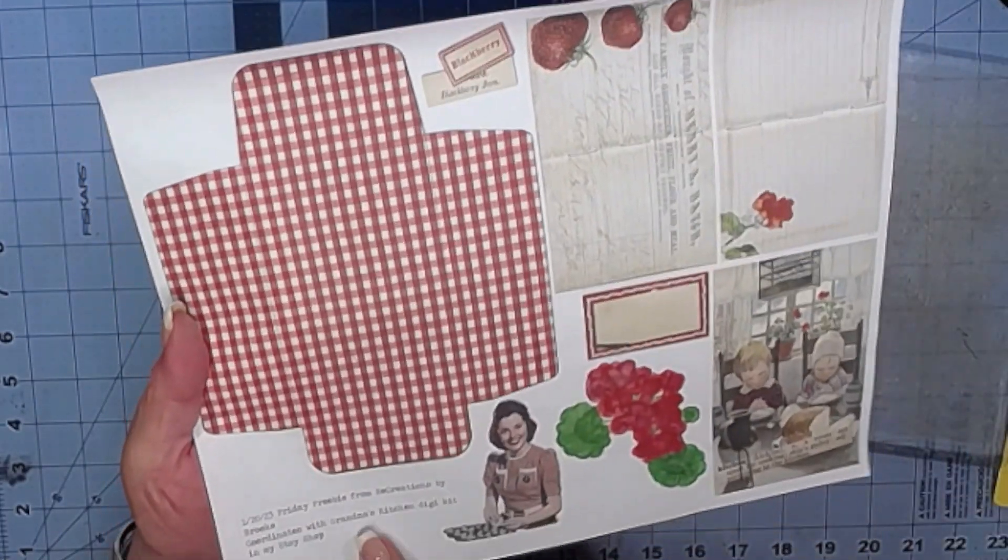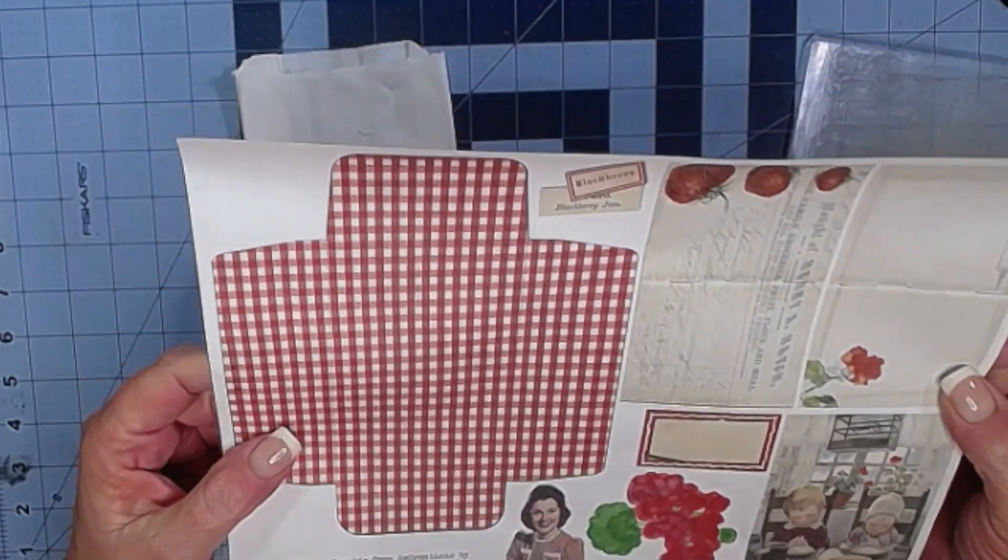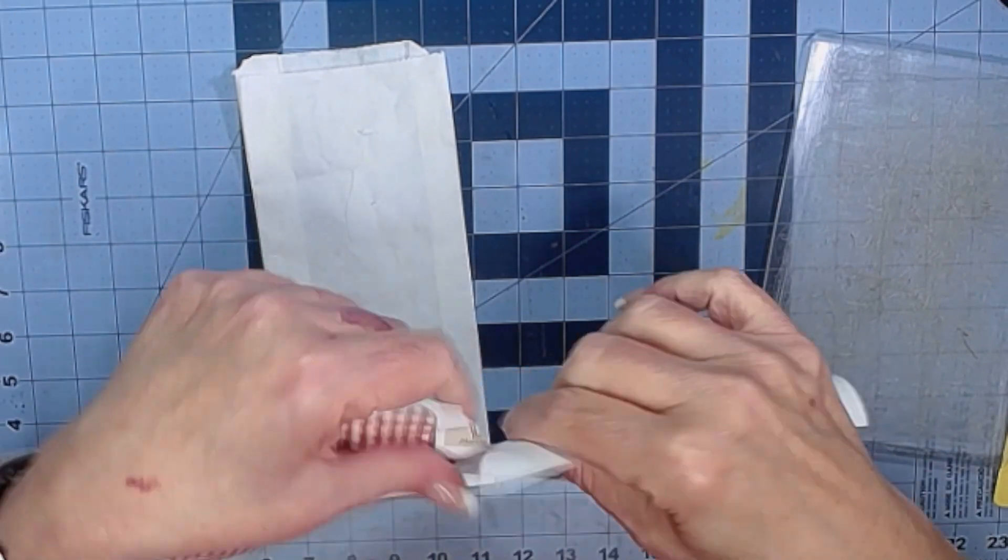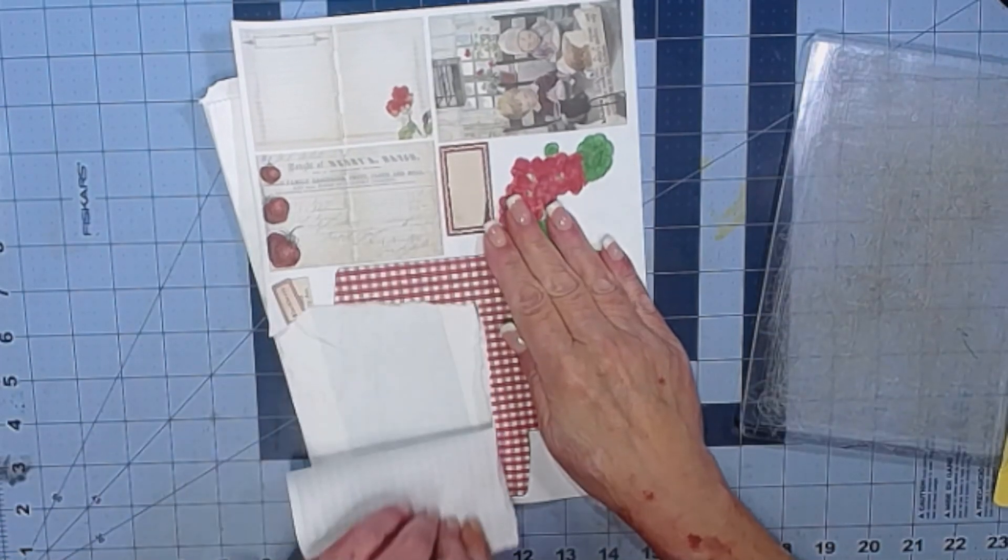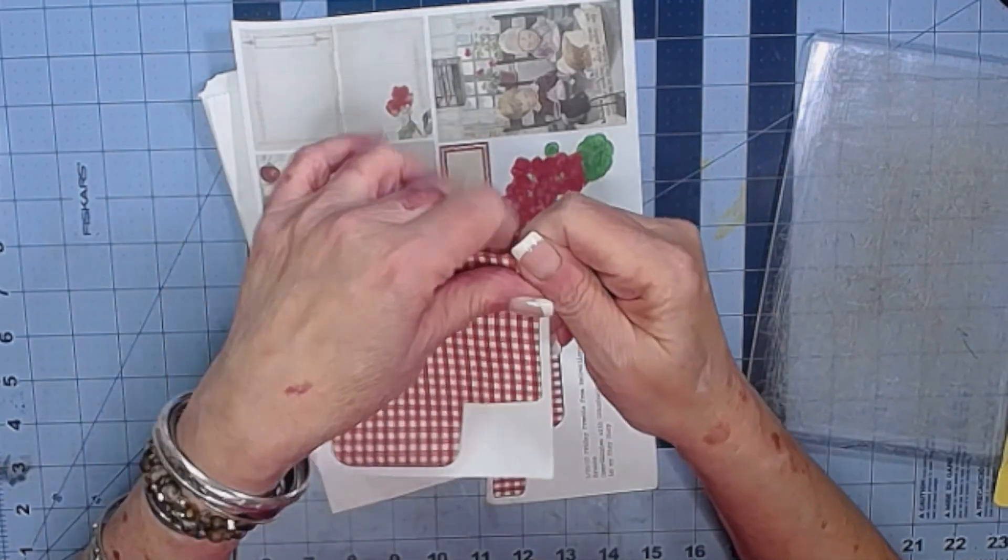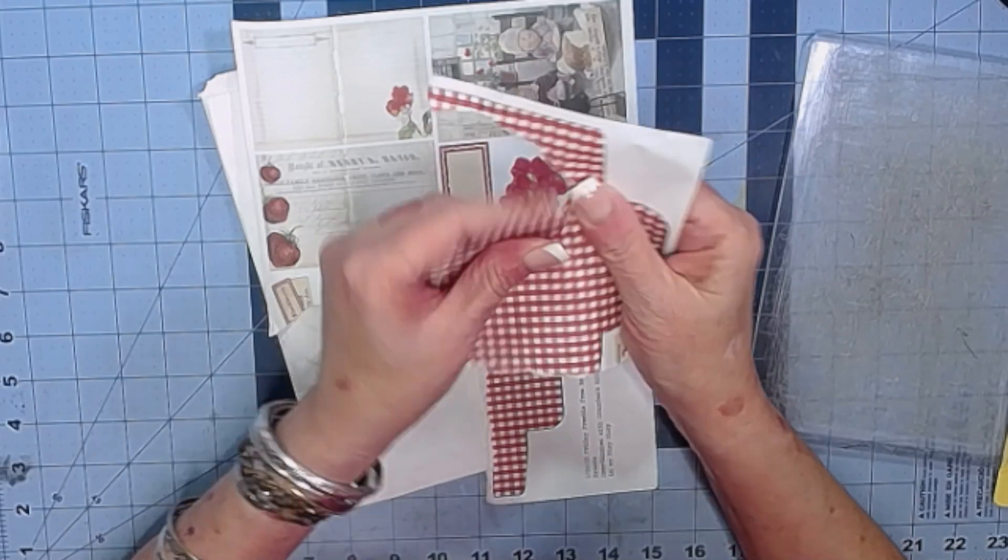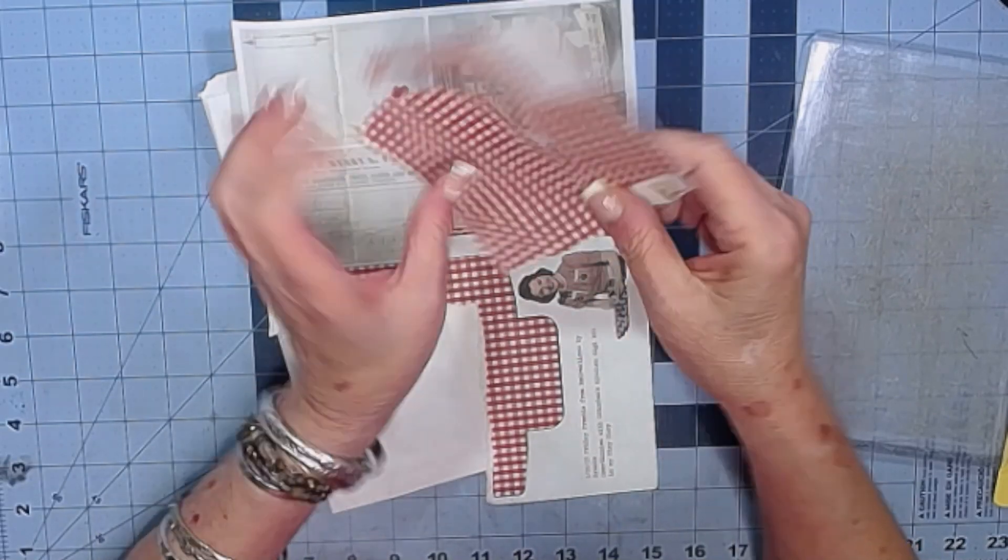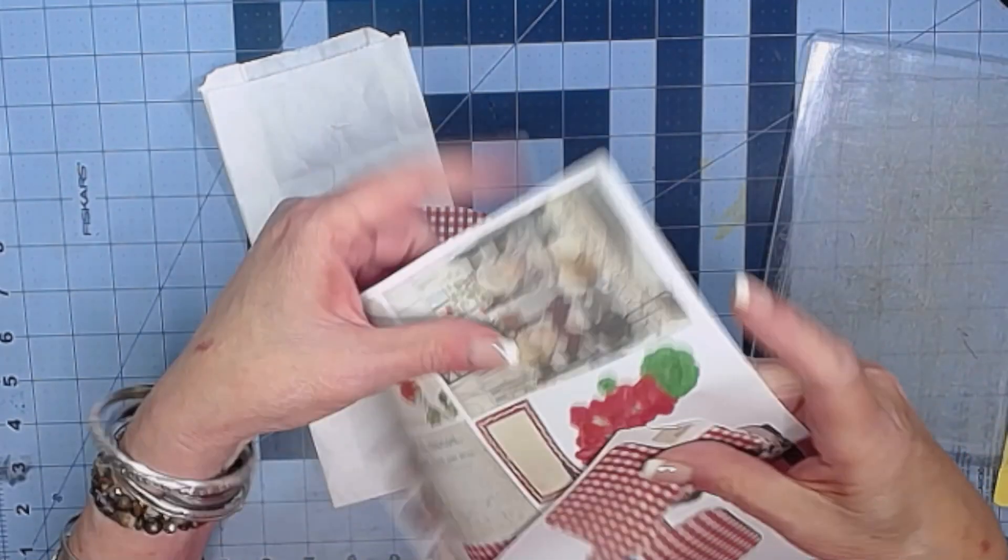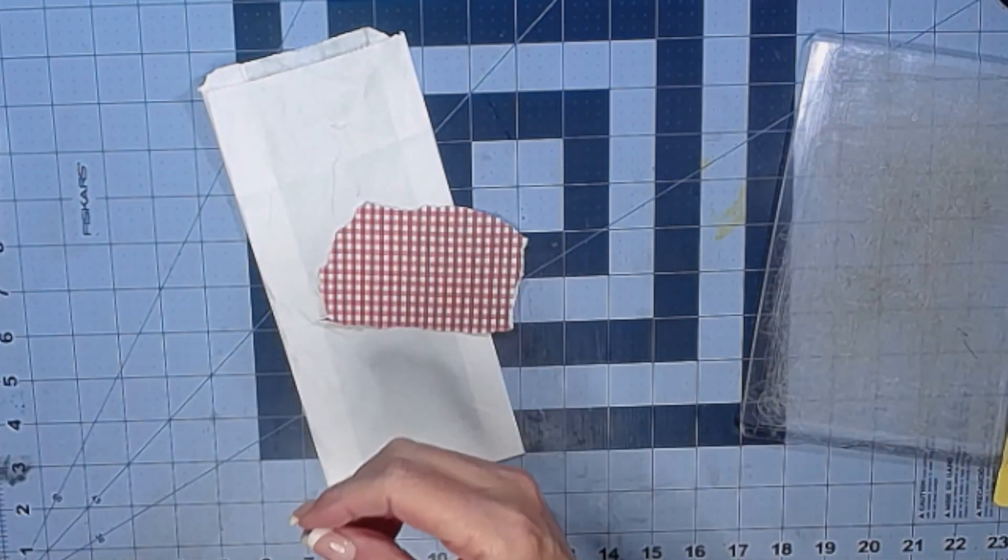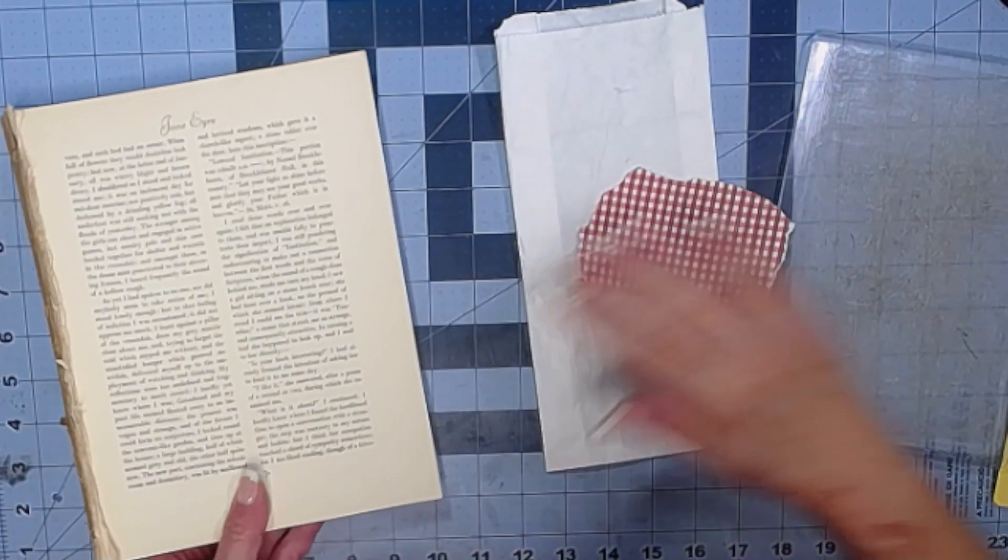The Digi is called Grandma's Kitchen. This is a freebie that coordinates with it from my Facebook group. Come on over and join us on Facebook if you haven't done that already. The link is also below. I try to put out a Friday freebie. It's more like a weekend freebie. Just make sure if you come and ask to join the group that you answer the little questions so I know you're not a robot.